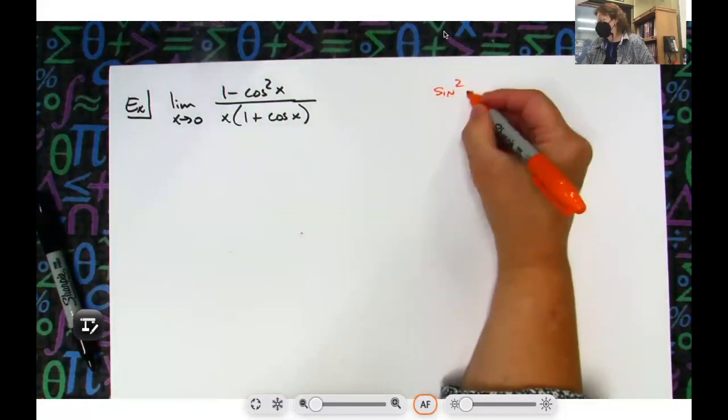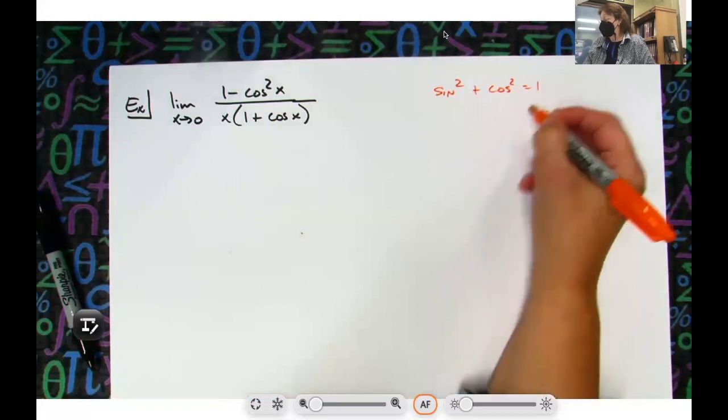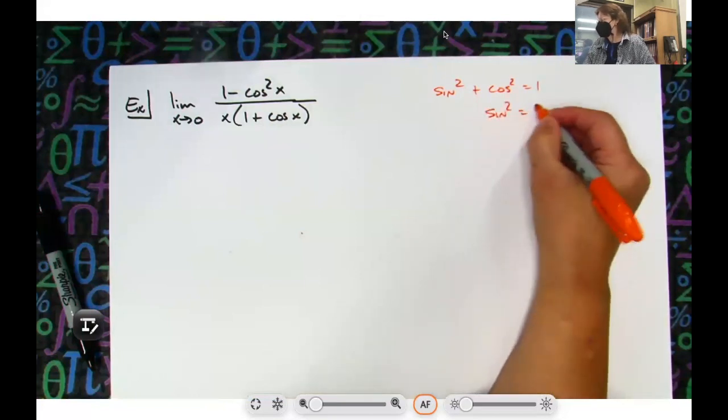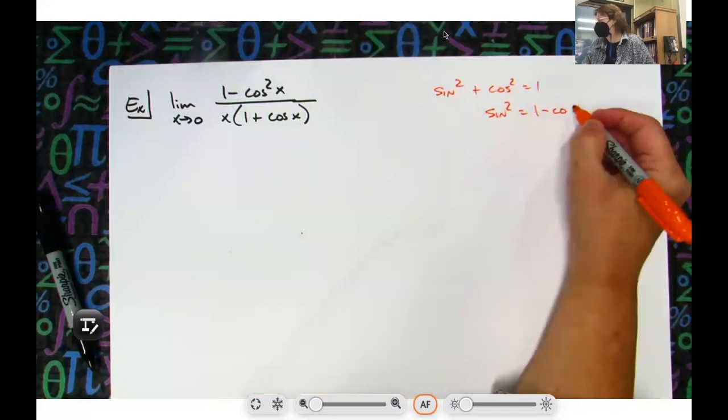Sine squared plus cosine squared equals 1. So if I subtract cosine from both sides, sine squared equals 1 minus cosine squared.